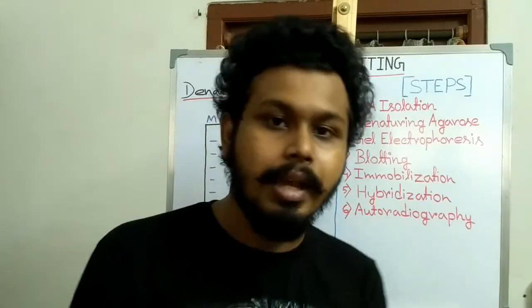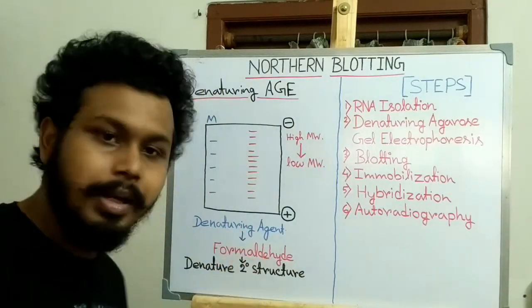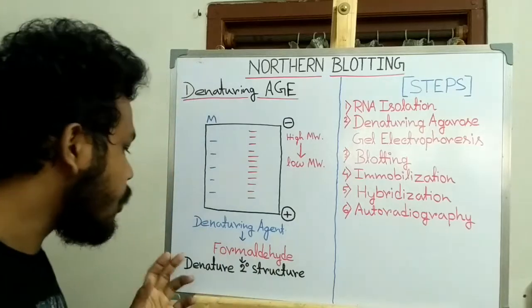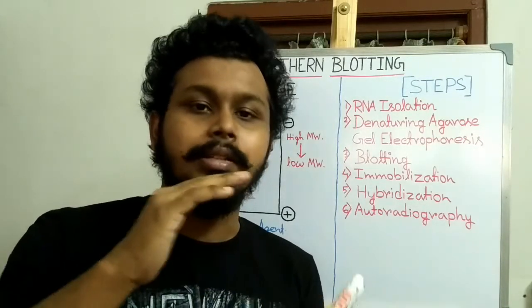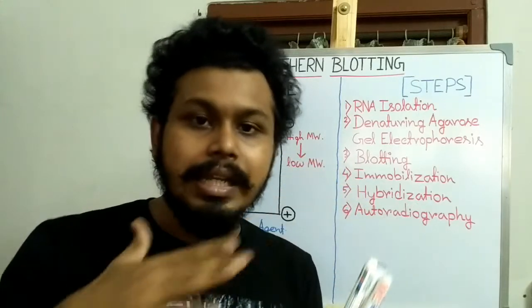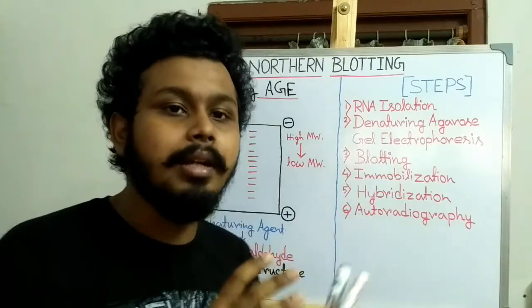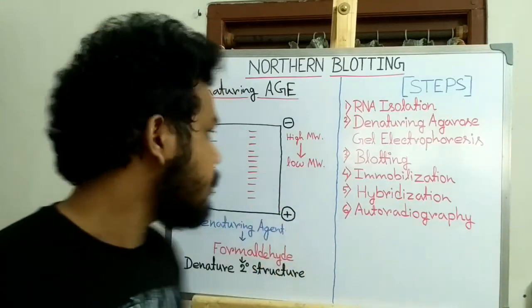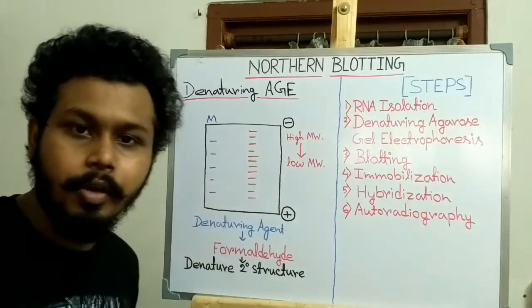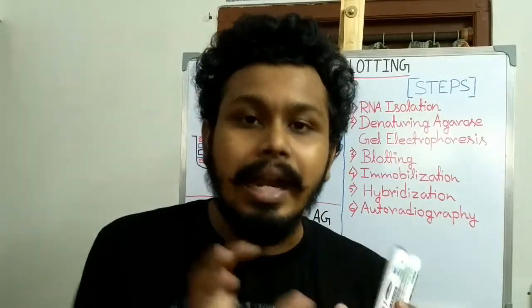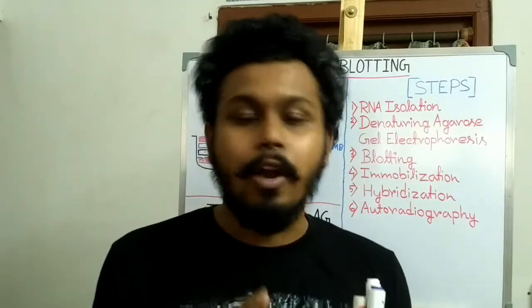After isolation of RNA from the cell or tissue, we separate the RNA molecules by denaturing agarose gel electrophoresis. The denaturing agent used is formaldehyde, which disrupts and denatures the secondary structure of RNAs, making them linear so they separate only by molecular weight or size, giving distinct bands.